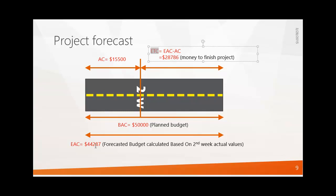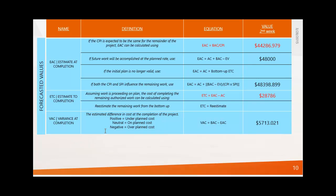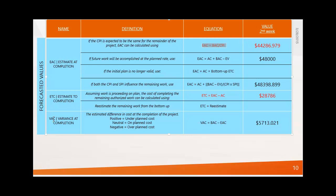Looking in more detail at EAC and ETC: EAC has many methodologies and equations. Here I have used BAC divided by CPI to calculate EAC. The Variance at Completion (VAC) is the difference between the initial project budget and the newly forecasted budget, giving five thousand seven hundred and thirteen dollars — meaning this amount will be saved at the end of the project.